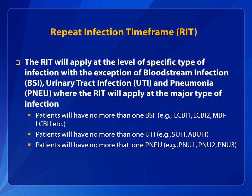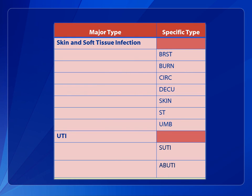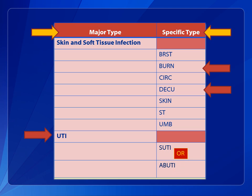The RIT is applied at the level of the specific type of infection. An exception to this rule is for bloodstream or BSI, urinary tract or UTI, and pneumonia or PNEU infections — with these, the RIT is applied at the major type of infection. Patients have no more than one BSI, UTI, or PNEU during their respective RITs. For example, when applying the RIT at the specific type level, a patient has no more than one burn infection during the 14-day burn RIT, but may have a decubitus infection identified. In contrast, when applying the RIT at the major type level, a patient with a UTI may only have a SUTI or an ABUTI during the 14-day UTI RIT.